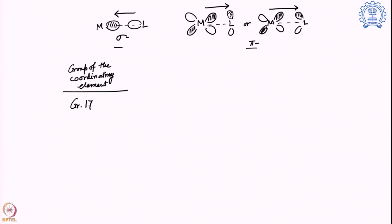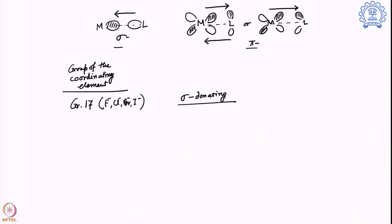For example, if it is group 17 — meaning fluoride, chloride, bromide, iodide — these ligands have a lot of electron density and no vacant orbital, so they can mostly do sigma interaction. However, since there is also electron density present in the filled p-orbital, the ligand can give electron density back via pi interaction. So for group 17, ligands are sigma donating and also pi donating — giving electron density to the metal through both sigma and pi interaction.